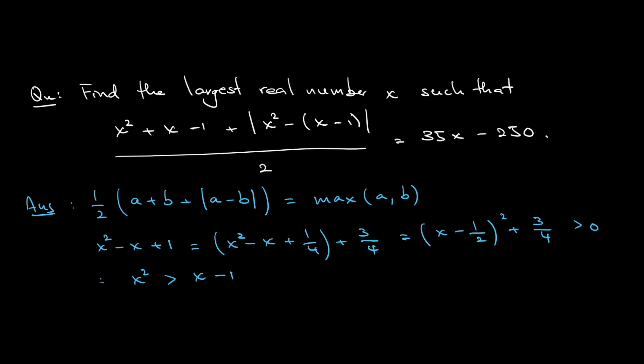Go back to our question. Look at the left-hand side of the expression in the question: half of x squared plus x minus 1 plus absolute value of x squared minus x minus 1. Notice this, my first observation. In fact, I can take a to be x squared and b to be x minus 1. Half of a plus b plus absolute value of a minus b, that would be equal to, from the first observation, the maximum of a or b.